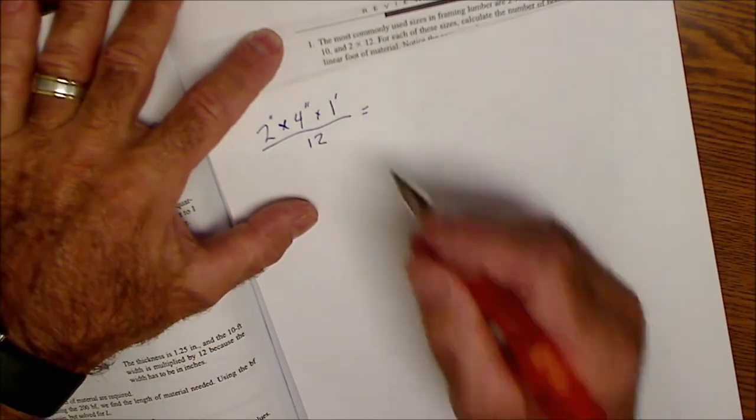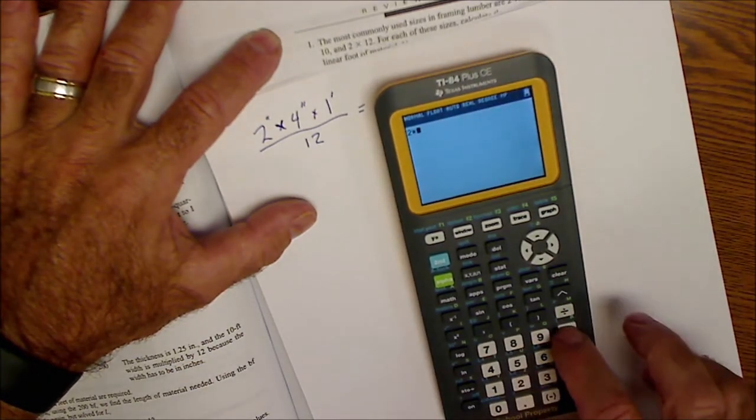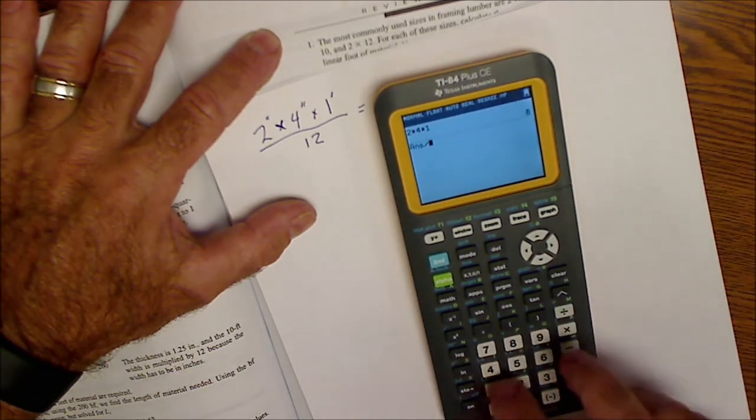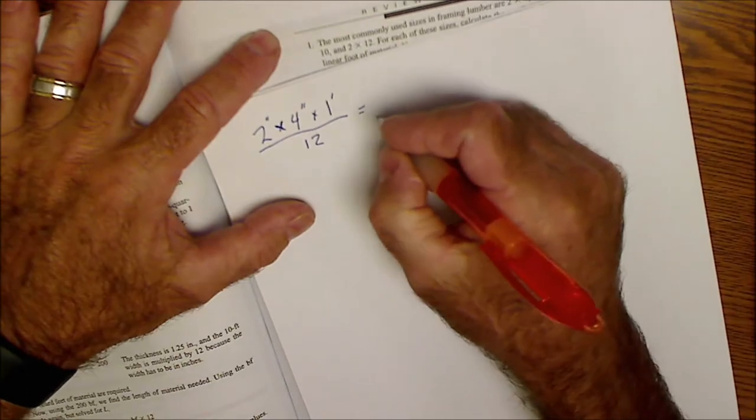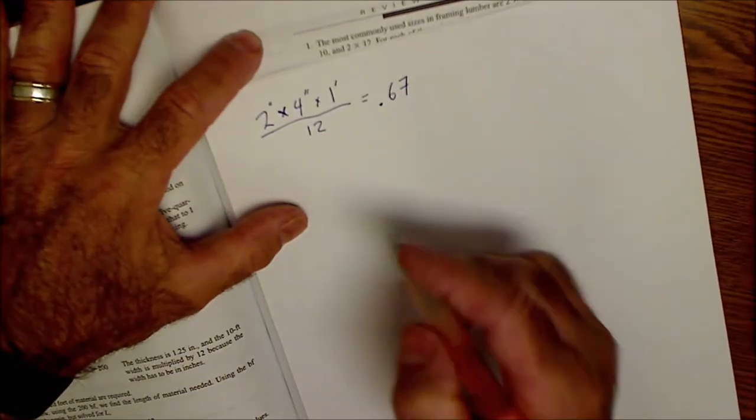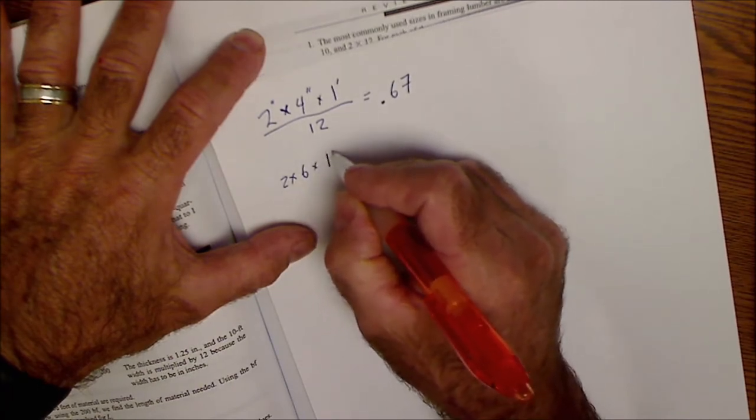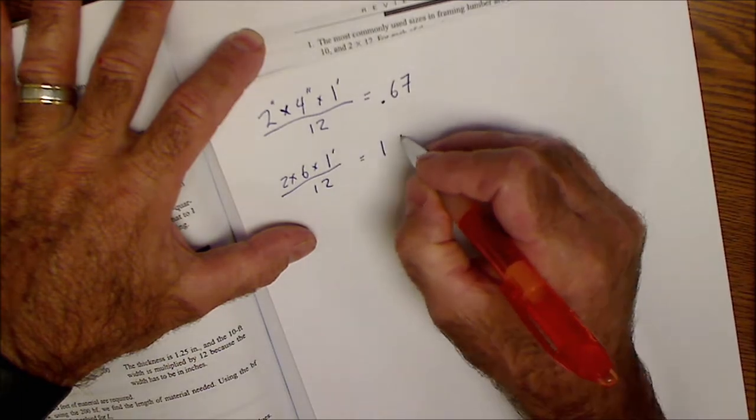So a 2x4 1 foot long is going to be 2 times 4 times 1 foot divided by 12, which equals 0.67 board feet. Then I'll do the next one, a 2x6 by 1 foot long divided by 12 will be 1 board foot.